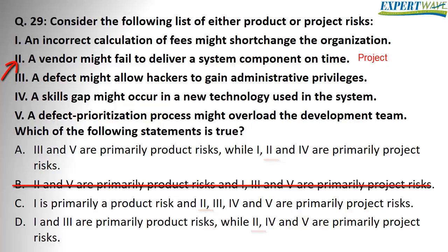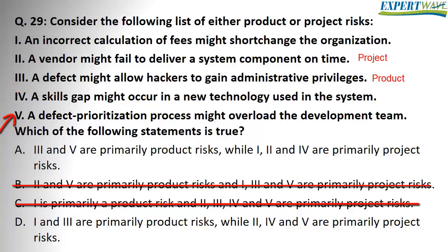Would option 3 help us narrow the selection? Yes. Option 3: a defect might allow hackers to gain administrative privileges. Hackers will hack the customer site, so this is a product risk. The answers are now narrowed down to A or D. Option 5: a defect authorization process might overload the development team. Development team — then this is a project risk. So the answer is D.